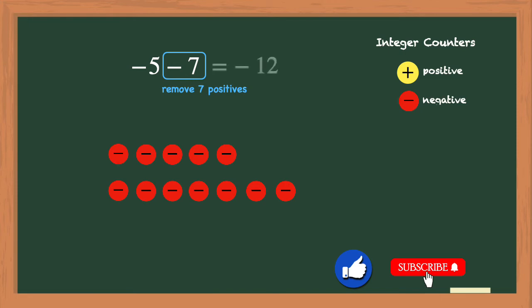If we use the additive inverse method, we would keep the negative 5, change the subtraction to addition, and then use the inverse or opposite of positive 7 to negative 7. Now we have negative 5 plus negative 7, which is negative 12.